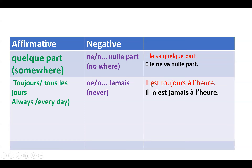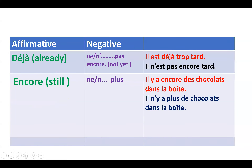The next pattern: 'toujours' (always) or 'tous les jours' (every day) — the negation becomes 'jamais' (never), using 'ne...jamais.' For example, 'il est toujours à l'heure' — he is always on time. Negation: 'il n'est jamais à l'heure' — he is never on time. So: 'ne' + verb + 'jamais.'